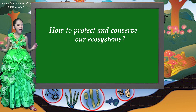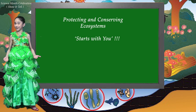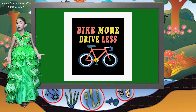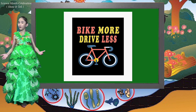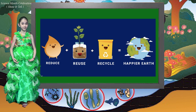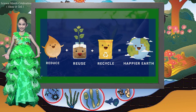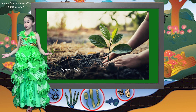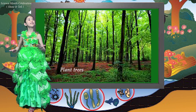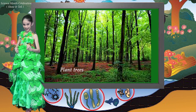How to protect and conserve our ecosystems? Protecting and conserving our ecosystems starts with you. Bike more, drive less to avoid overpollution. Reduce, reuse, recycle to conserve natural resources and landfill spaces. Plant trees. Trees provide food and oxygen. They help us save energy. They clean the air. They help us combat climate change.